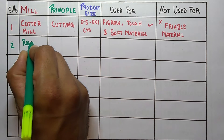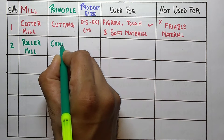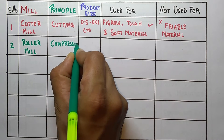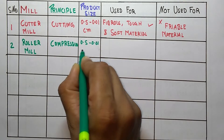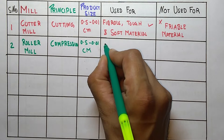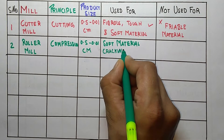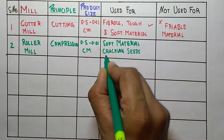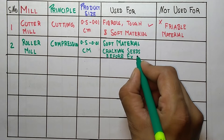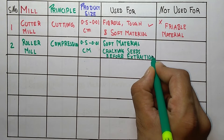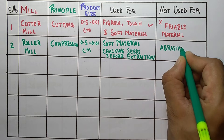The second one is roller mill. Its principle is compression. The product size is the same as cutter mill, that is 0.5 to 0.01 cm. It is used for soft material and cracking seeds before extraction. It is not used for abrasive materials.